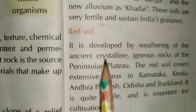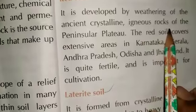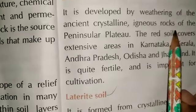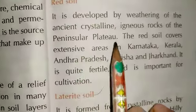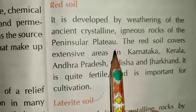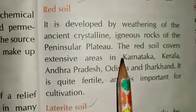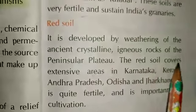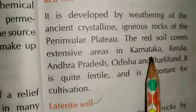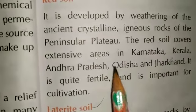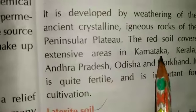Red soil is formed by the weathering of ancient igneous rocks. It is found on the Deccan Plateau and Peninsula. Red soil covers a large area, particularly in Karnataka.